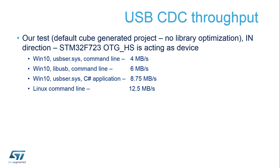In the first test, device speed in the IN direction — data sent from the device to the host — was measured with the default Windows 10 driver and a command line application: 4 megabytes per second were achieved. With an application written in C# using the same driver on the PC side and the same microcontroller configuration, more than double was achieved.